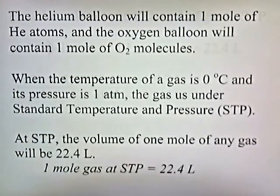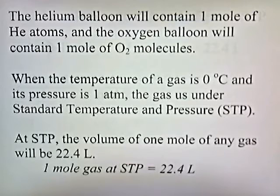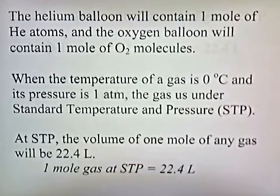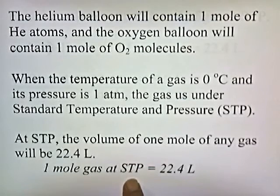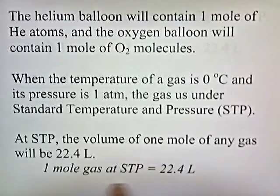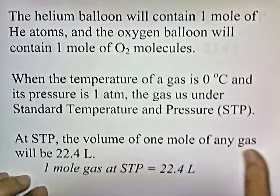A helium balloon will contain one mole of helium atoms, and the oxygen balloon will contain one mole of oxygen molecules. When the temperature of a gas is zero degrees Celsius and the pressure is one atmosphere, the gas is under standard temperature and pressure, or STP. At standard temperature and pressure, the volume of one mole of any gas will be 22.4 liters. You need to memorize that one mole of any gas at STP has a volume of 22.4 liters. We're going to use this fact to solve some problems.